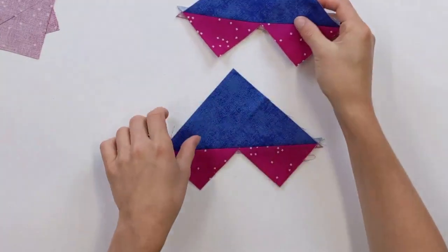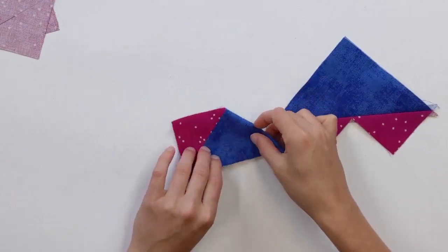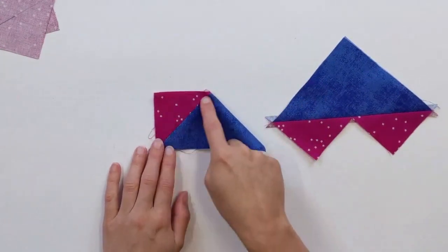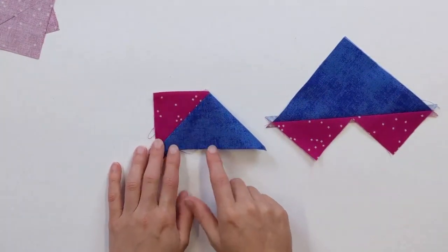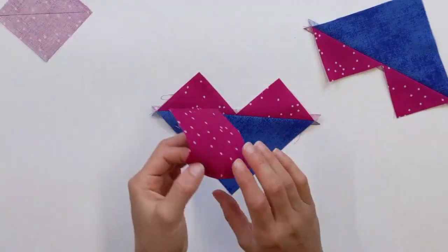So now we have two of these. If I fold them in half, well, they're starting to look like flying geese, right? So we've got half of our flying geese background. We just need to figure out the other side. So we're going to do that with the last two remaining pieces that we have.